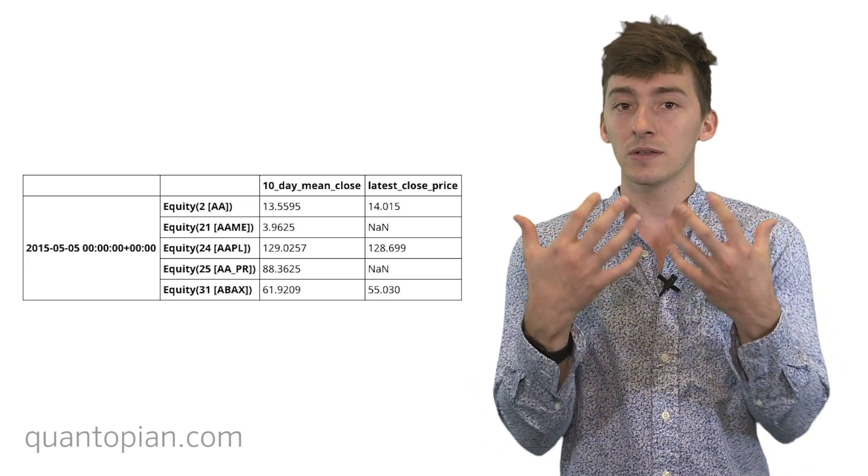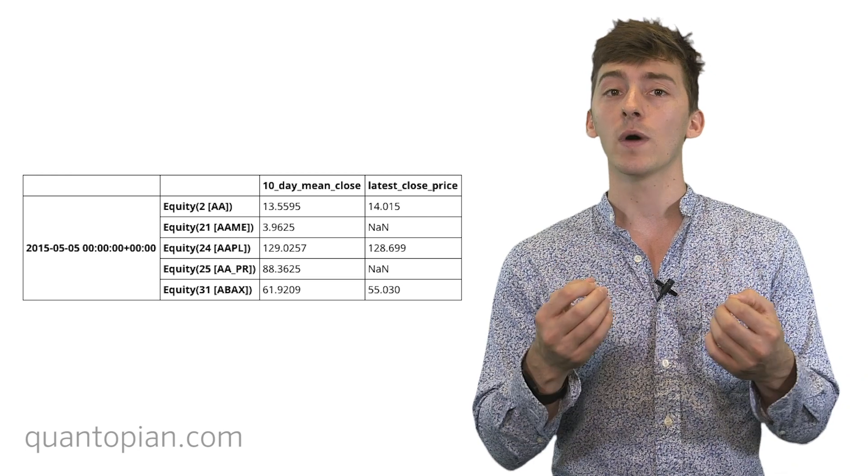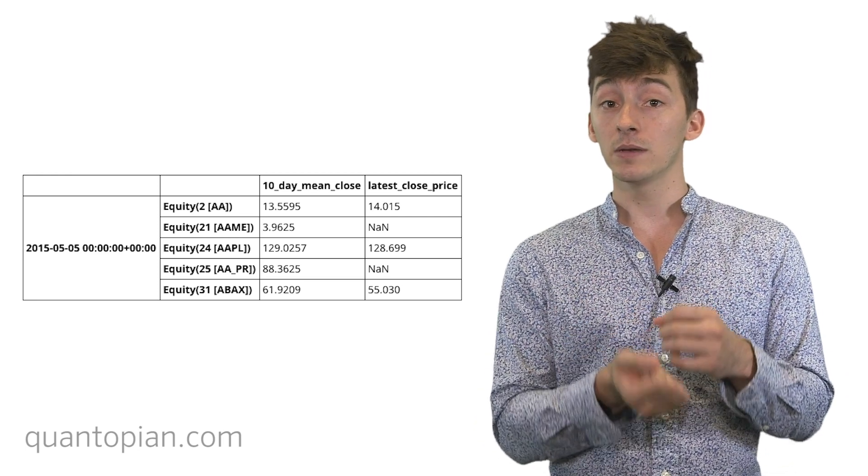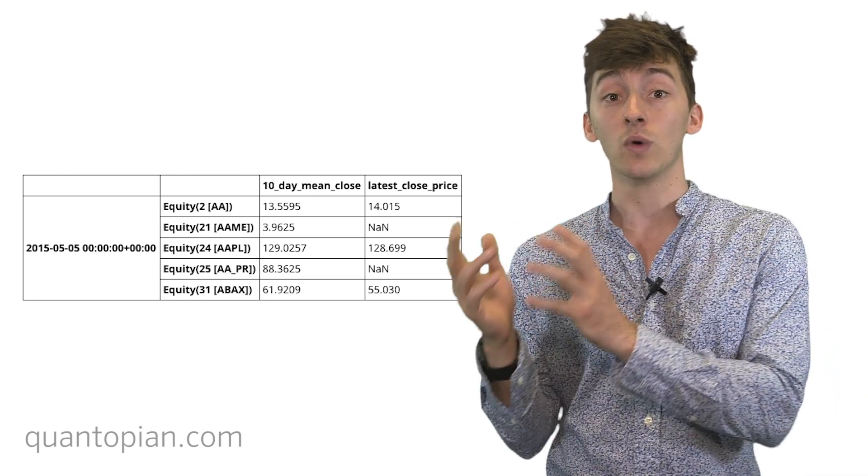It allows us to define things in a symbolic way. There's a difference between defining a pipeline and running a pipeline. Defining a pipeline is the stage where we say these are my filters, these are my factors, and I would like to have them in this pipeline. And then running a pipeline is when we actually execute that. The difference is like the difference between writing down a recipe and actually cooking using that recipe.